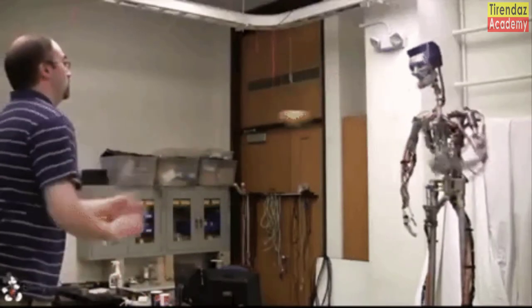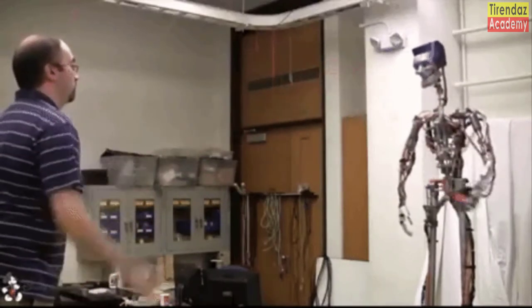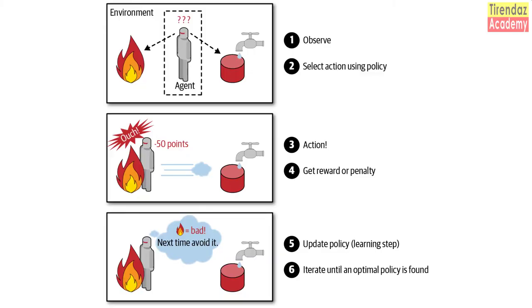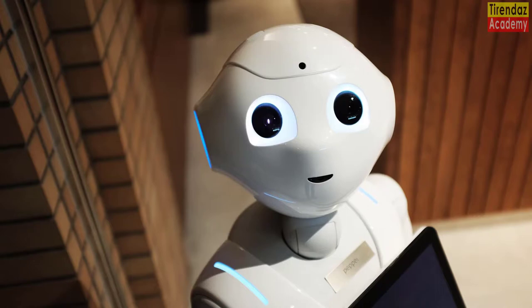In reinforcement learning, the goal is to develop a learning system that improves the decision-making process by communicating with the environment. An action is chosen and implemented, in return for which a reward or punishment is received. Thus, the best strategy, called policy, is learned with rewards and penalties. The most popular example for reinforcement learning is chess. The system decides the best place for the chess piece. At the end of the game, the strategy is rewarded by winning and penalized by losing. Many robots use this algorithm to learn how to walk.